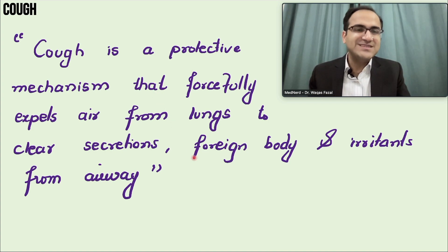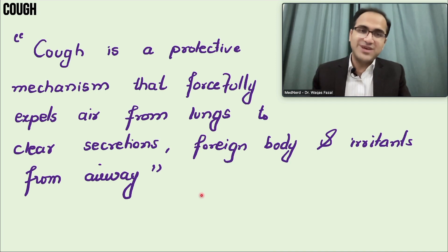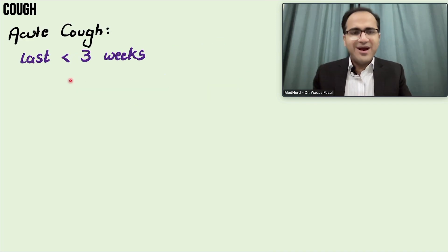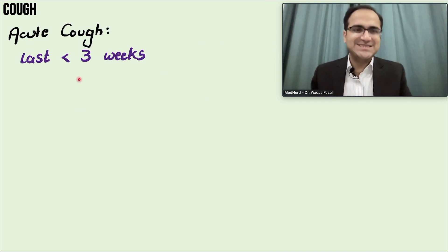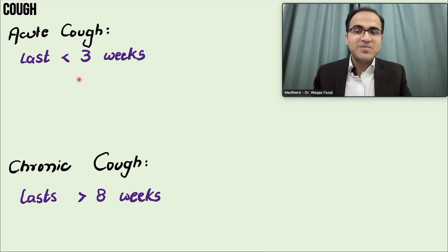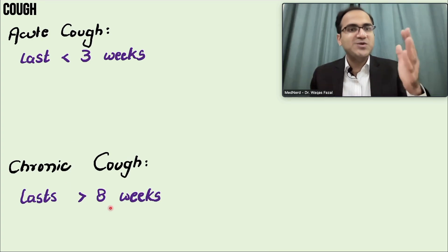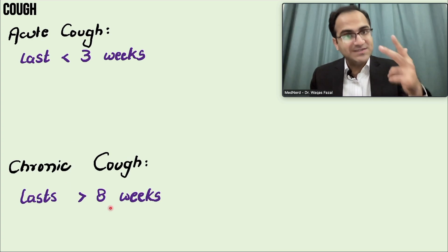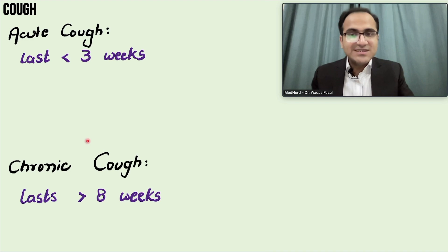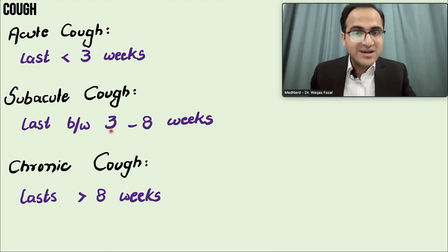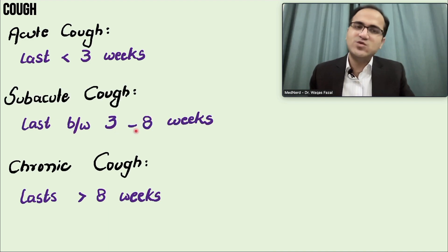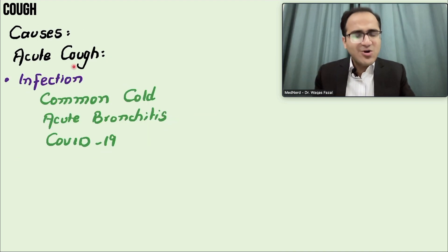In some cases, this protective mechanism does not play a protective role for the airway. Acute cough lasts less than three weeks, chronic cough lasts greater than eight weeks (greater than two months), and subacute cough lasts between three to eight weeks.